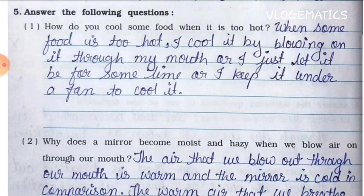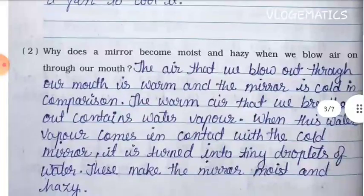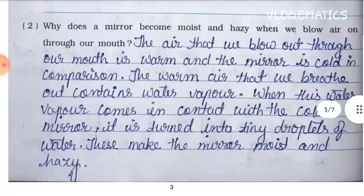Question one: How do you cool some food when it is too hot? Answer: When some food is too hot, I cool it by blowing on it through my mouth, or I just let it be for some time, or I keep it under a fan to cool it.